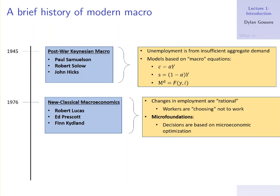In one case, these economists say changes in employment are rational. It's not that there's insufficient aggregate demand — it's that the changes in employment we see are the result of workers choosing not to work. Say the wage is lower than what I want to work at, so I'm just choosing not to work. It's not unemployment per se; it's changes in employment being determined rationally by workers making these choices. But most importantly for our course, they started to rely on micro foundations — decisions are going to be based on microeconomic optimization.